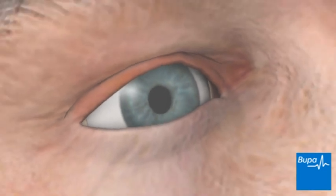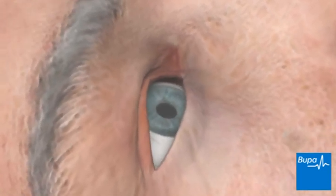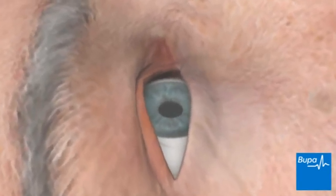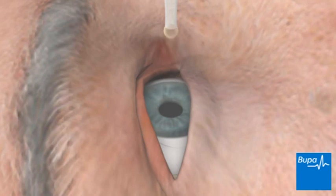Once your ophthalmic surgeon has examined you, drops will be placed in your eye to dilate or widen your pupil. This makes it easier for the surgeon to see the lens of your eye.